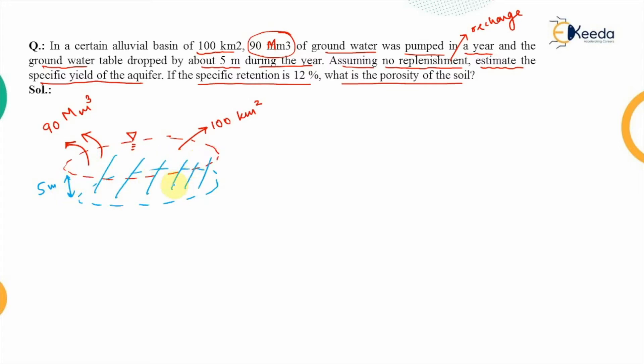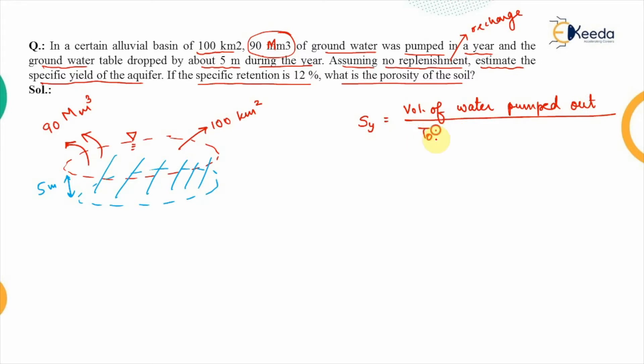This means the volume of the medium which was drained corresponds to the drop in water table. In groundwater, the water is present within the voids of the medium. When the water table drops by 5 meters, that volume of the medium is being drained out. The specific yield is defined as the volume of water taken out divided by the total volume of the medium from which it was extracted.